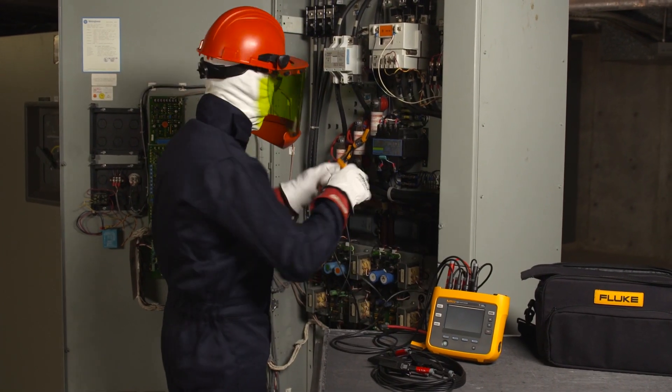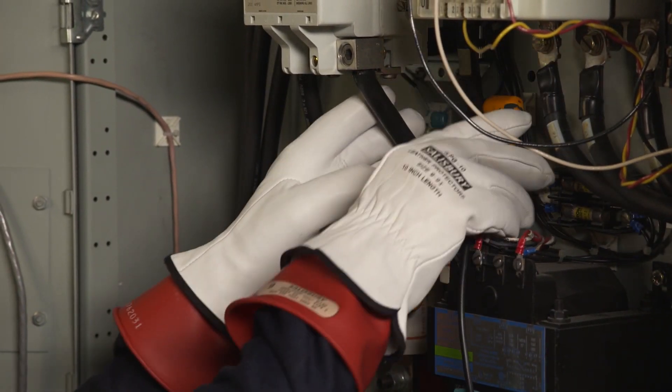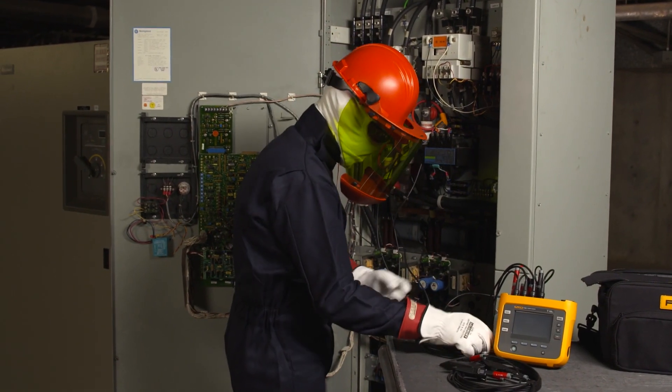The Fluke 1736 and 1738 give you more visibility, reduce uncertainty, and help you make better power quality and energy decisions.